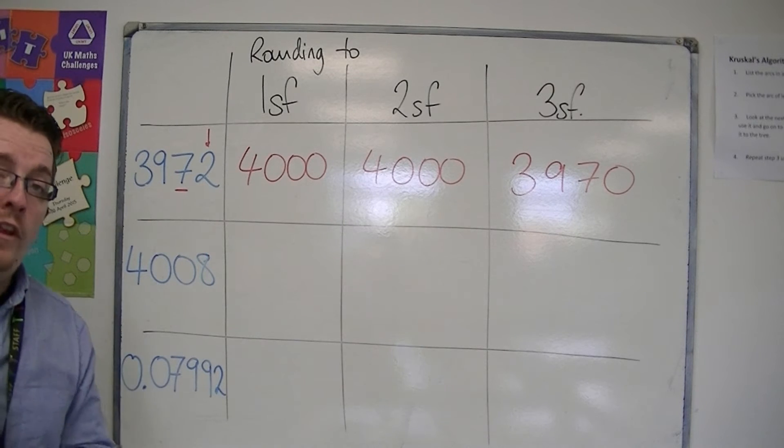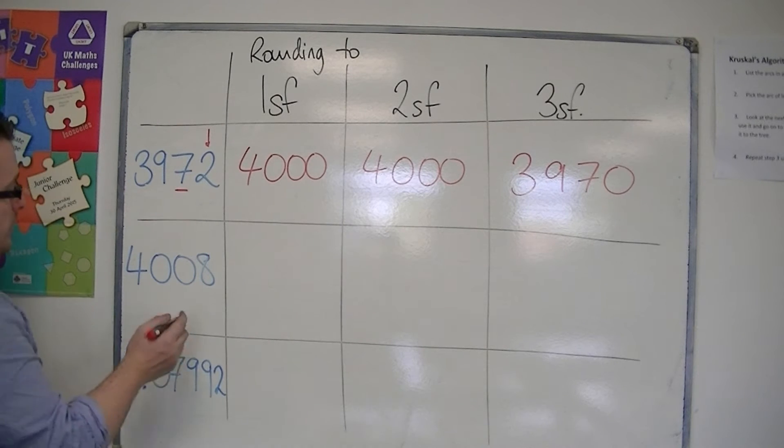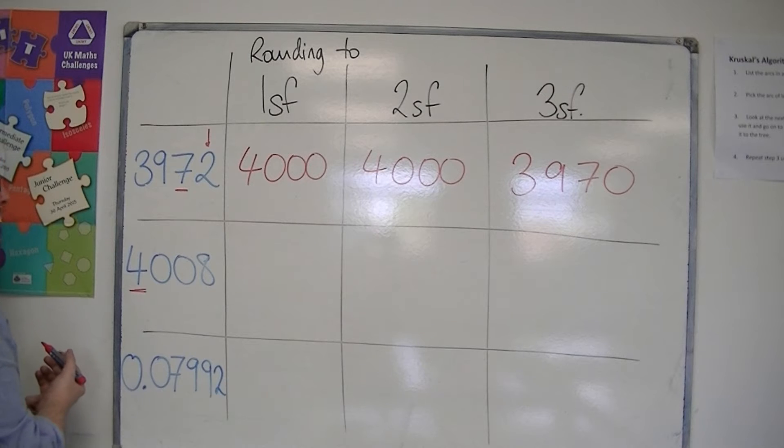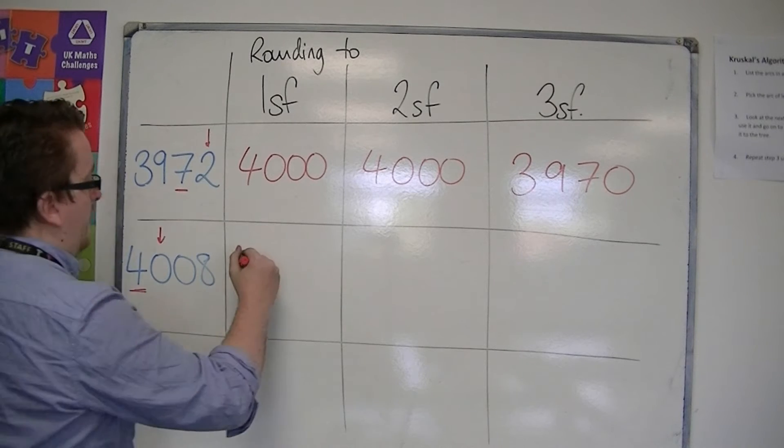For 4,008, our second example, to one significant figure, that's the first significant figure column. One to the right is zero, so I round down to 4,000.